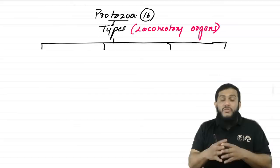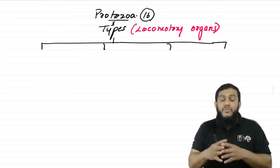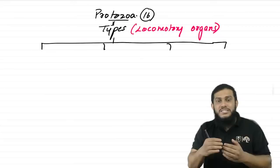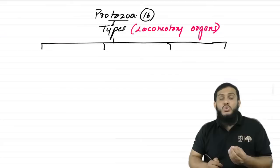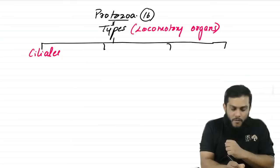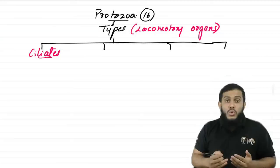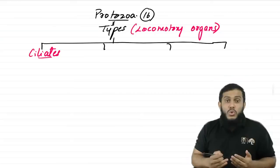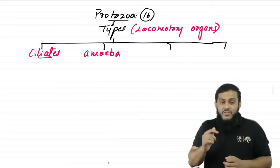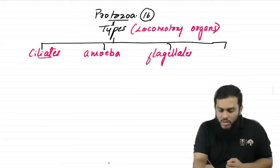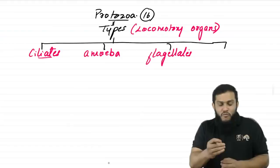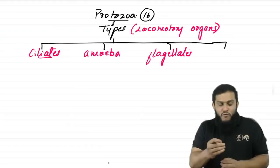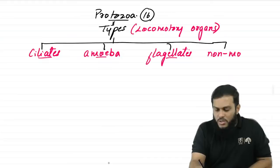The major difference: protozoa are unicellular organisms — made up of only one cell — so you cannot see them with naked eyes; you require a microscope. Helminths are multicellular organisms — they are worms — and you can easily see them with naked eyes. There are three types of locomotory organs in protozoa: cilia, pseudopodia, and flagella. Protozoa without any locomotory organ are non-motile and are called sporozoa, because they contain a special structure called sporozoids.